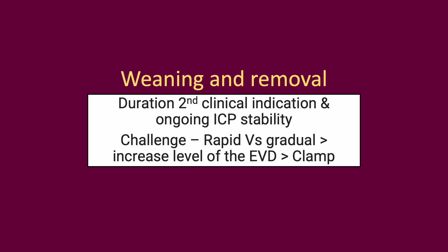Weaning of an EVD can be a gradual approach or a rapid clamping trial. A more prolonged approach involves increasing the height of the EVD — for example, 5 centimetres per day — over a period of time to challenge the patient and ensure they are not drain-dependent before the EVD is clamped. A clamping trial may accelerate EVD weaning; however, the ICP should be continuously monitored and if pressure increases in a sustained fashion, the EVD should be unclamped.